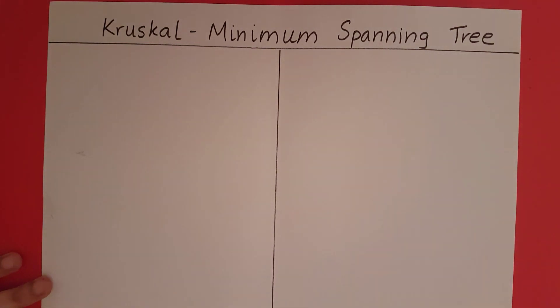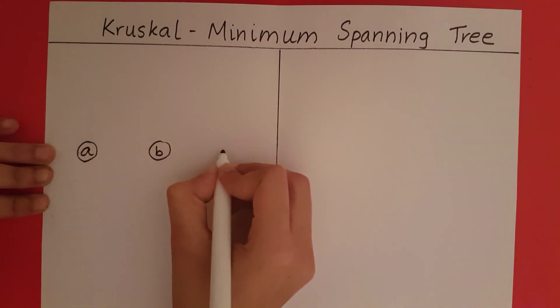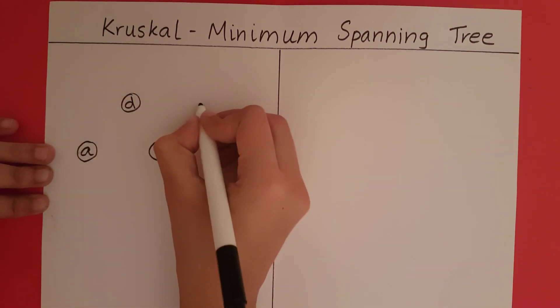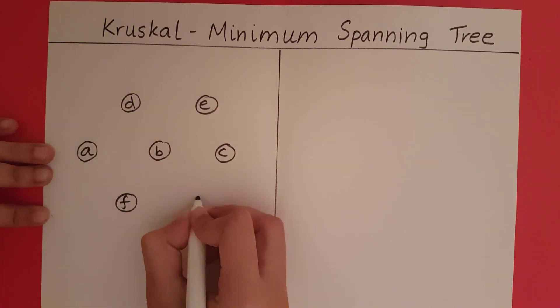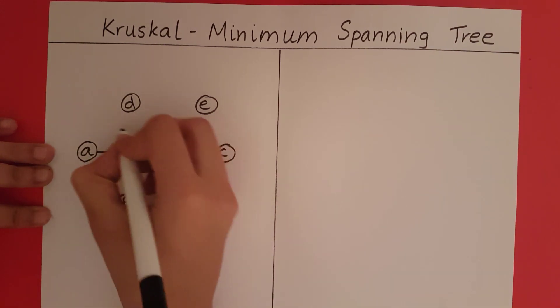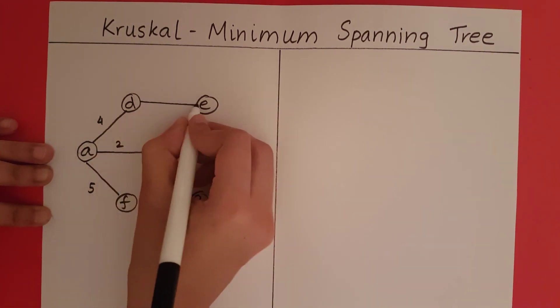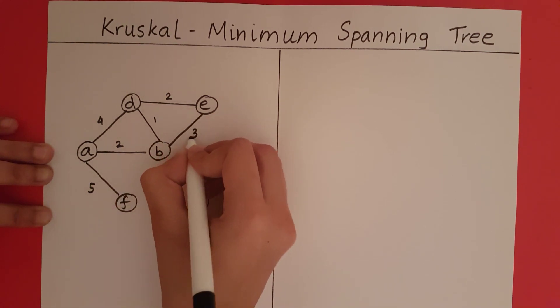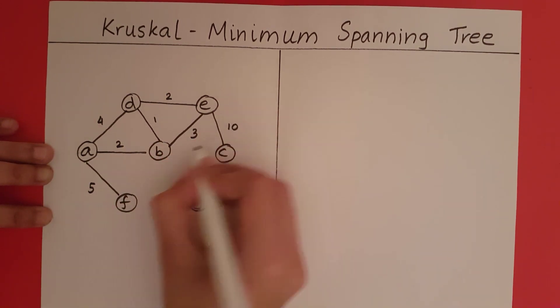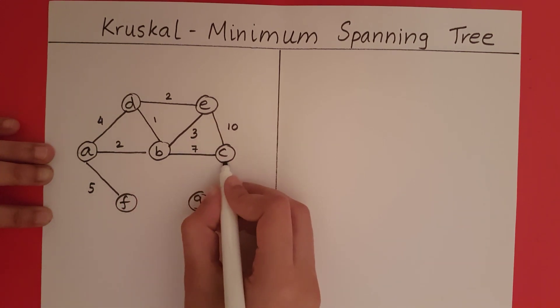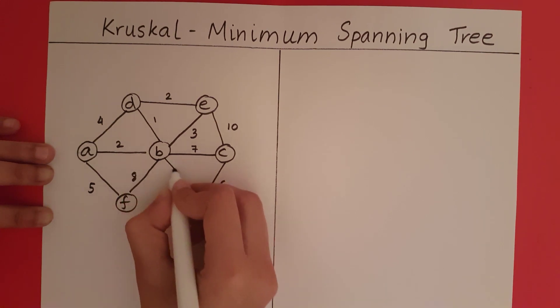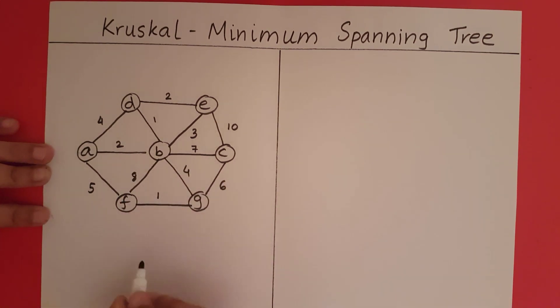So with this in mind, let's take a look at Kruskal's algorithm using an example. This is going to be the graph that I want to construct the minimum spanning tree for.